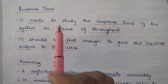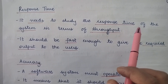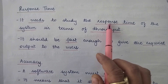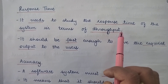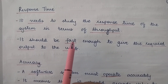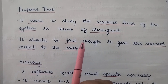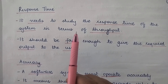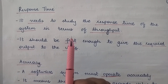The other issue considered in operational feasibility is response time. We need to study the response time of the system in terms of throughput — how much time this system is taking to provide the solution of a particular problem. It should be fast enough to give the required output to the users. When I enter an input into the system, I expect the output to be as fast as possible. The system would not be considered efficient if it is not providing a faster response time, no matter how accurate the result is.